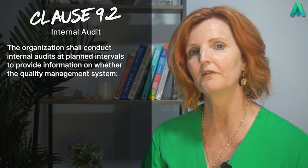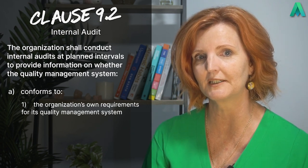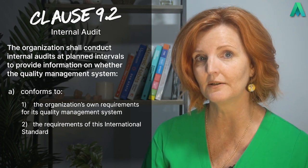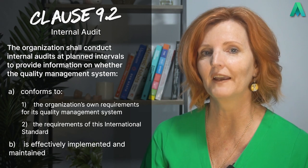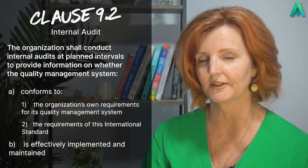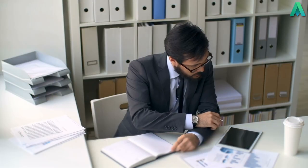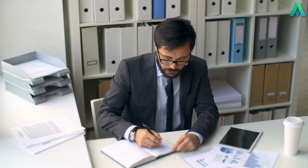This clause starts off with sub-clause 9.2.1 stating: the organisation shall conduct internal audits at planned intervals to provide information on whether the quality management system A, conforms to 1. the organisation's own requirements for its quality management system, 2. the requirements of this international standard, and B, is effectively implemented and maintained. This sub-clause is spelling out what our internal audits should be against, which is normally referred to as the criteria.